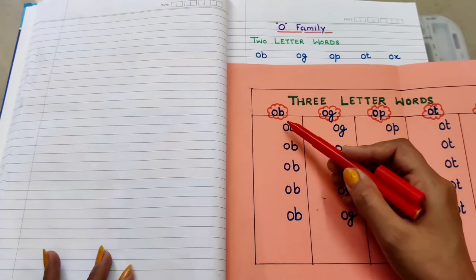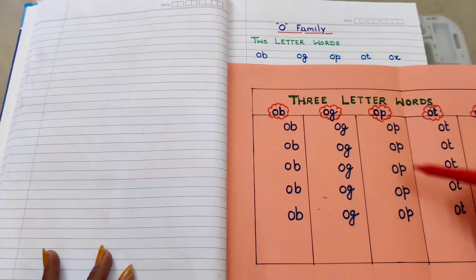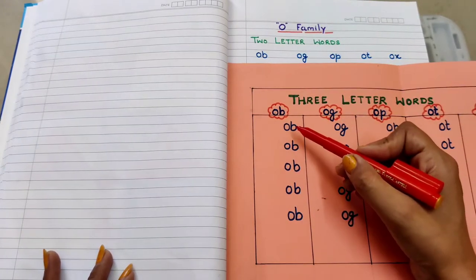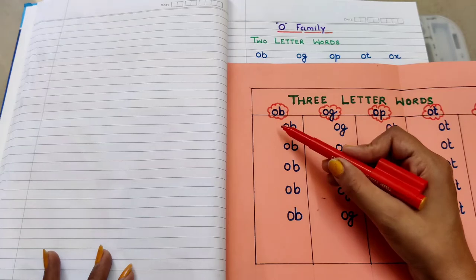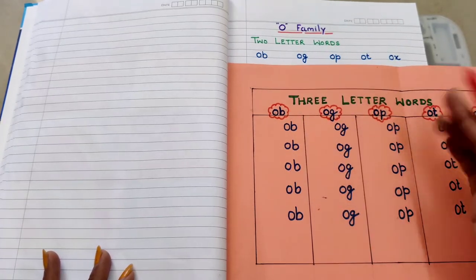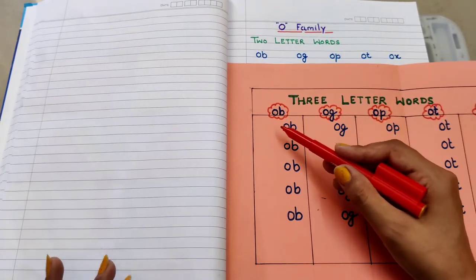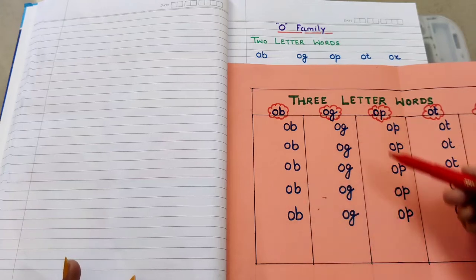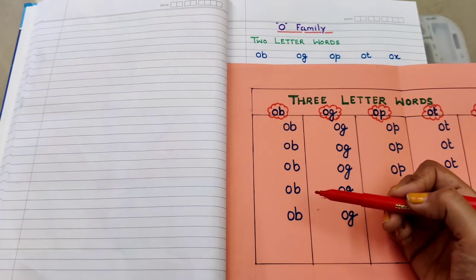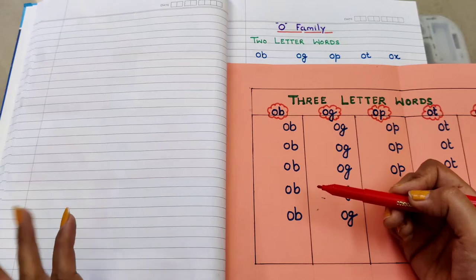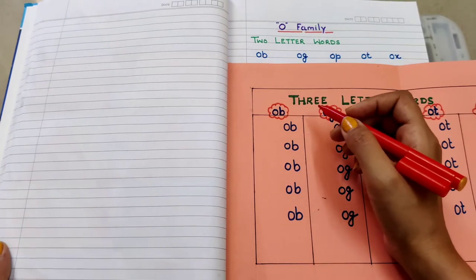As you can see here, I have written all rhymes that we have read in two-letter words. When we introduce three-letter words, we use these rhymes as ending sounds and then add beginning letters to make three-letter words. We will introduce the children to ending sounds with beginning letters added on.